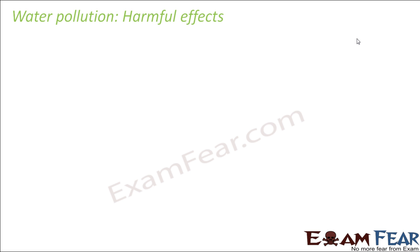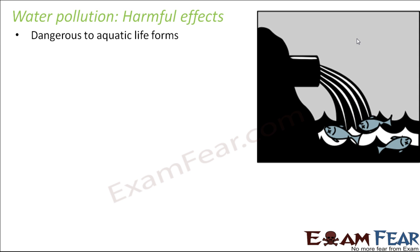Let us look at the harmful effects of water pollution. If water gets polluted with harmful substances, it becomes dangerous to aquatic life forms. Just think of the entire aquatic life that lives completely depending on water — fishes, aquatic plants, and various other organisms. Marine organisms like whales and sharks all live inside water, so if the water itself is poisonous, it can mean the end of entire aquatic life. All aquatic life forms can be killed due to polluted water.